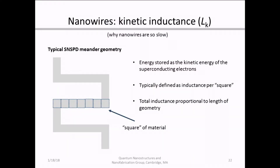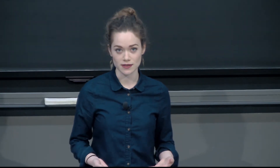Before going into our approach, I want to briefly explain why these nanowires are so slow. In superconducting nanowire devices, most of the inductance comes from energy stored as kinetic energy of the superconducting electrons — we refer to this as the kinetic inductance. It's typically defined as an inductance per square. Here I've shown a typical SNSPD meander geometry, which you can physically break down into squares. The longer your meander is, the more squares of material you have and the higher inductance you have, giving a total inductance proportional to the length of your geometry. These detectors require a very large active area, so the meander is quite considerable, which is why they have such high inductance.